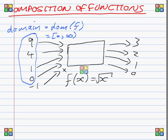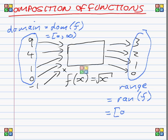All of the numbers that you get out of a function has a special name, is the range. Which can be written as RAN of f. And in this case, 0 to infinity. So that's what a function is.